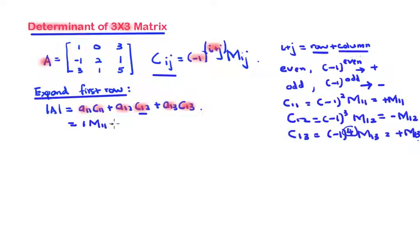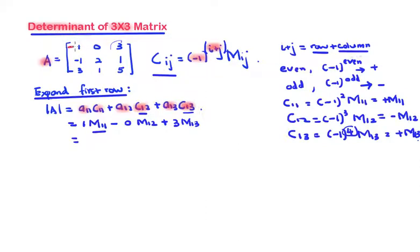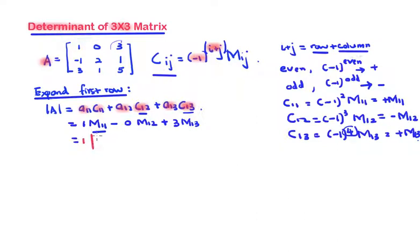So we have negative 0 times m12, plus a13 which is 3, times c13, which is positive m13. To find m11, block the first row and first column. For m13, block the first row and last column. You get the remaining 2 by 2 submatrices to evaluate.